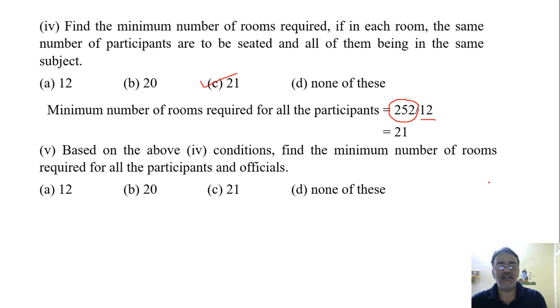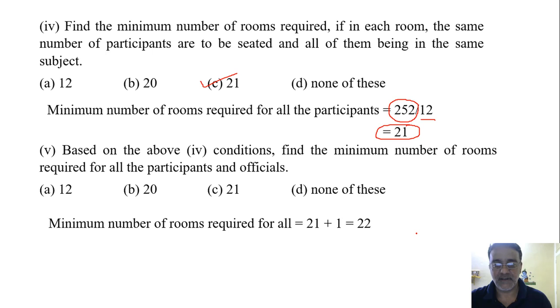Next question, based on the above fourth condition, find the minimum number of rooms required for all the participants and officials. It is given in the statement that officials ke liye separate room hona chahiye. We already got 21 for all the participants. So the correct answer is 22. Here no option is given for 22, so the correct answer is D. Any doubt in this question?